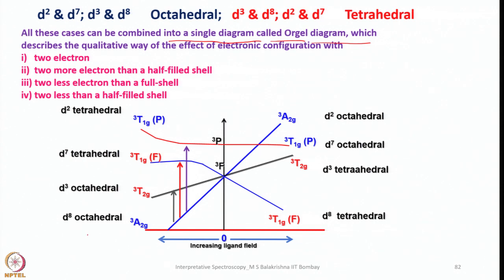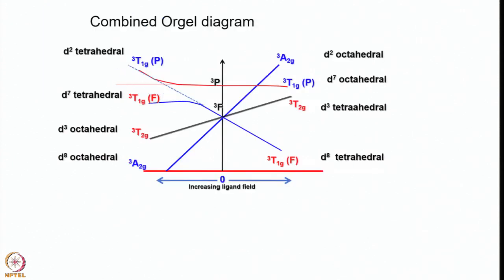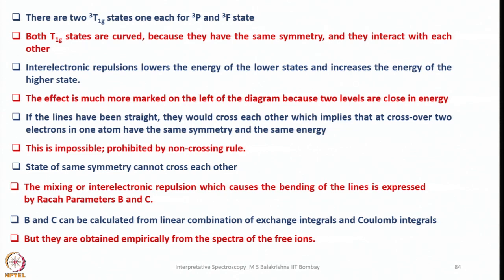The Orgel diagram shows three transitions of the D⁸ system starting from ³A₂g to ³T₂g, ³A₂g to ³T₁g(F), and ³A₂g to ³T₁g(P). A notable feature is that one energy level bends downward while the ³P state bends upward. This happens because there are two ³T₁g states — one each from ³P and ³F — and both T₁g states are curved because they have the same symmetry and interact with each other.